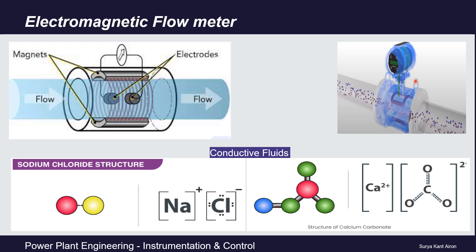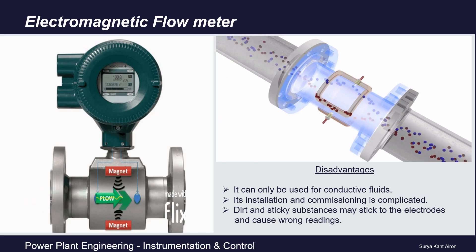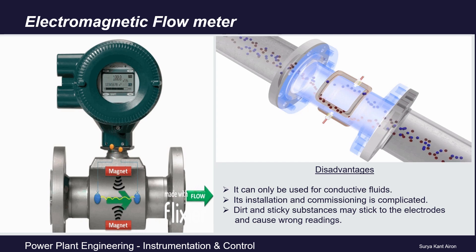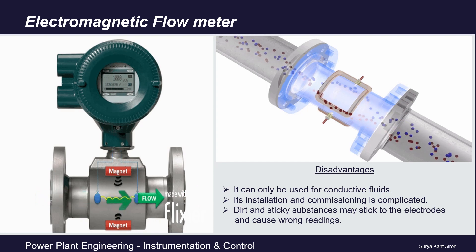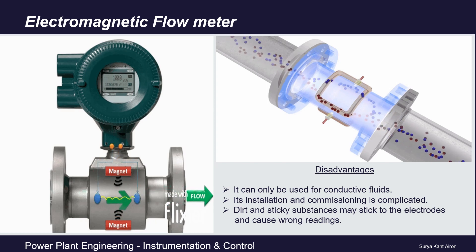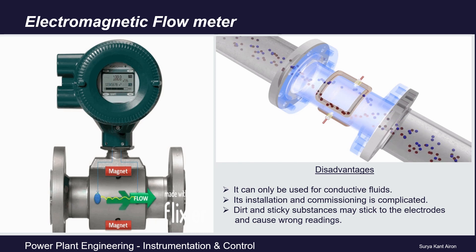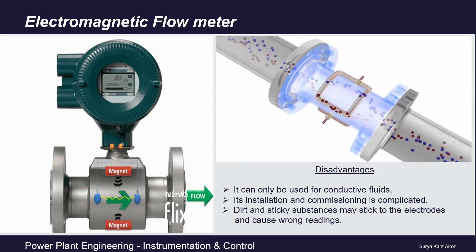The basic condition is that the fluid must be conductive — the conductivity must be greater than five micro-siemens per centimeter. The fluid should have positive and negative ions, like salt NaCl which has sodium positive ions and chlorine negative ions, or calcium carbonate with calcium positive and carbonate negative ions. If salts are removed from water to produce demineralized water, its conductivity is nearly zero, so electromagnetic flow meters cannot be used for DM water — the flow meter will always show zero reading irrespective of the actual flow.